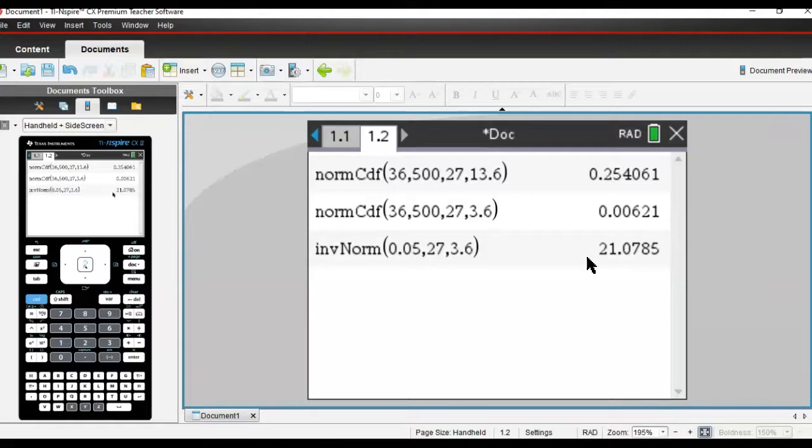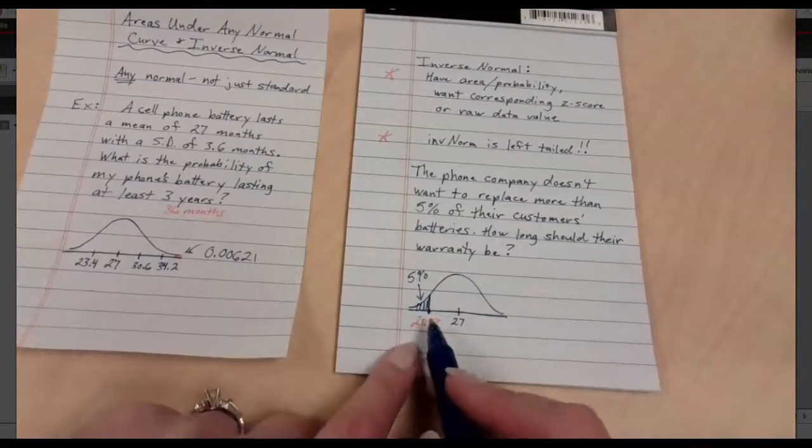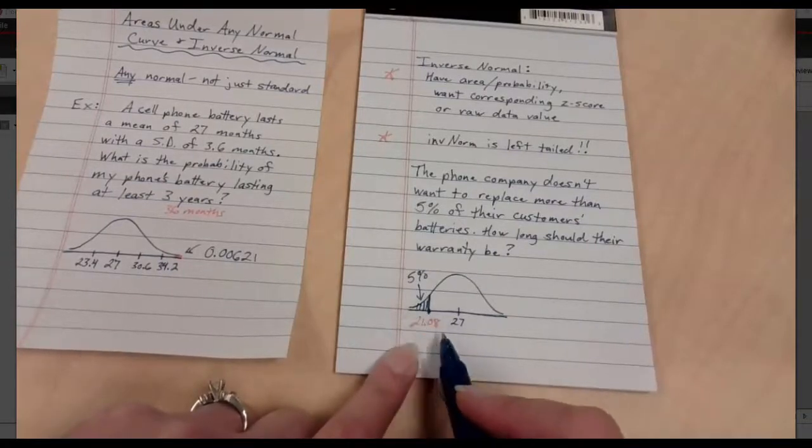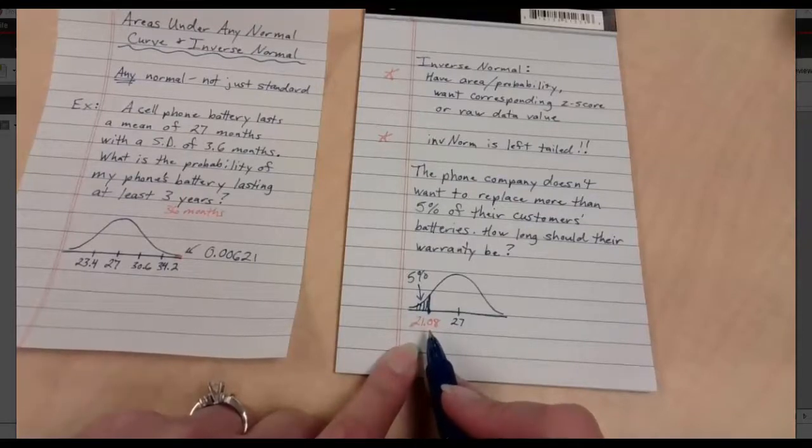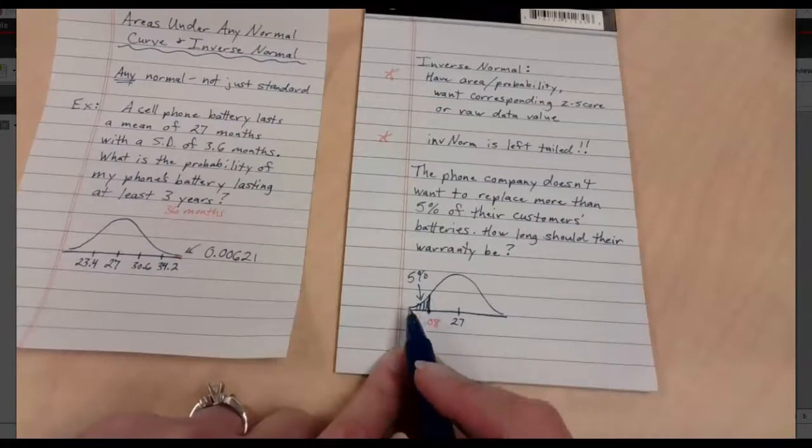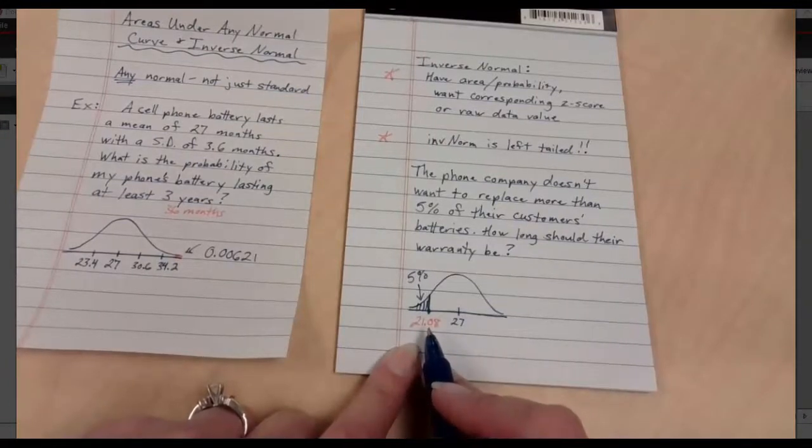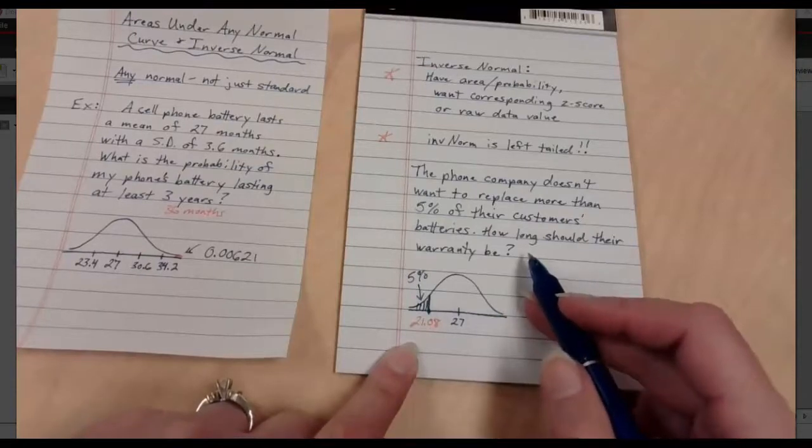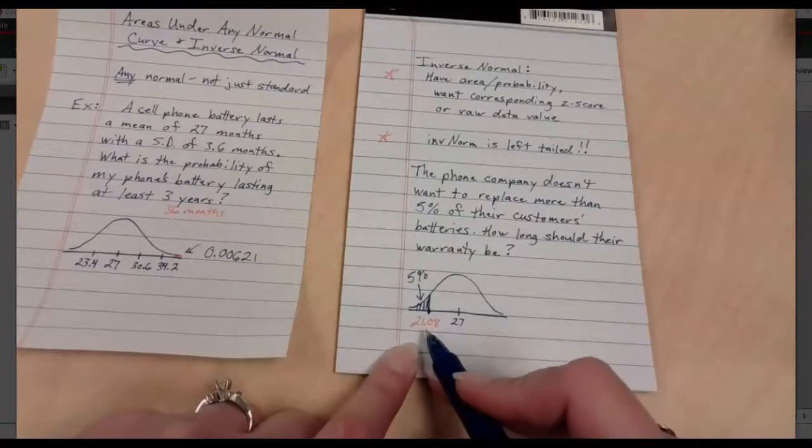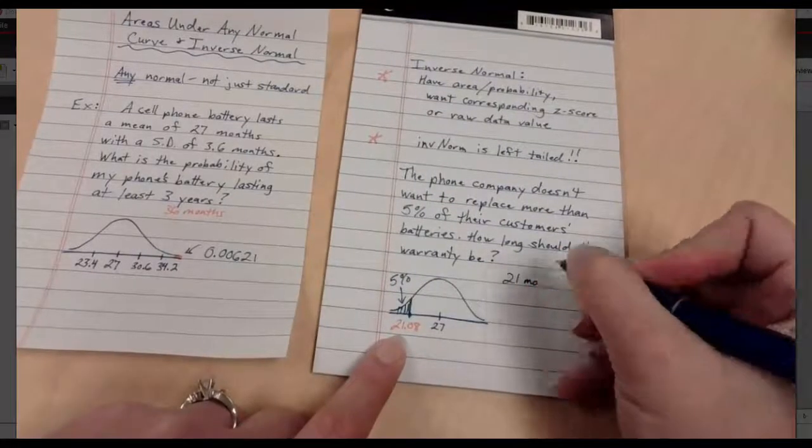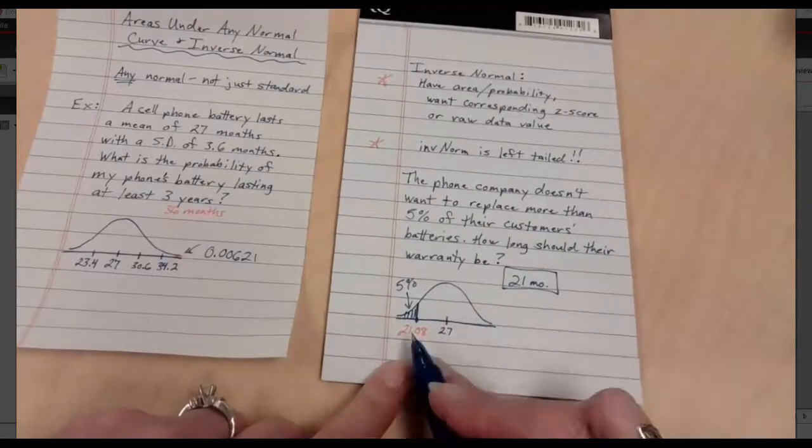What does that indicate? I called it 21.08. That means that right here, this is the raw data value that corresponds with the 5%. This is 21.08. This is saying if I run a warranty right around 21 months, any phones whose batteries die before 21 months, that's going to be roughly 5% that I end up replacing. And if it's more than that, I don't want to pay for it. So that's going to be where I want to set my warranty. If I truly didn't want to pay more than 5%, I would probably set it at a 21 month mark and say, I'm willing to guarantee my phone's battery that I'm selling you until 21 months. And after that, you're on your own.